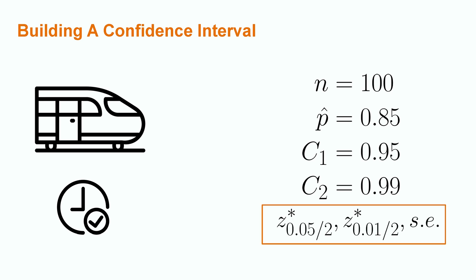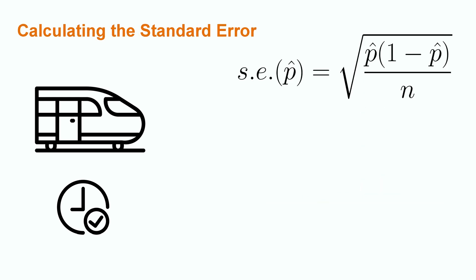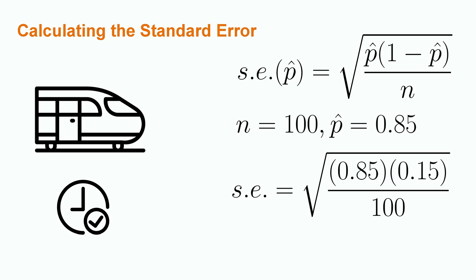In order to solve this problem, we are going to have to identify our z-star multiplier for both cases and the standard error term, which will be the same for both cases. Let's start with the standard error term. We know that the equation for the standard error of a single population proportion is the square root of the quantity p hat times 1 minus p hat divided by the sample size n. Given a sample size of 100 and a p hat of 0.85, we have that the standard error term is equal to the square root of 0.85 times 0.15 divided by 100. This leads to a standard error result of 0.036.